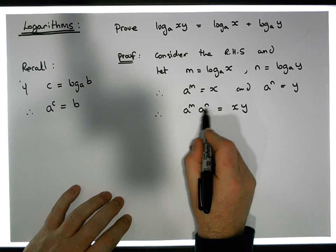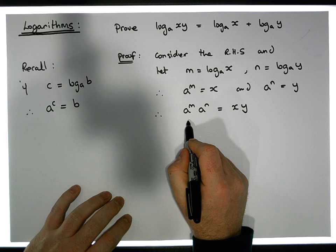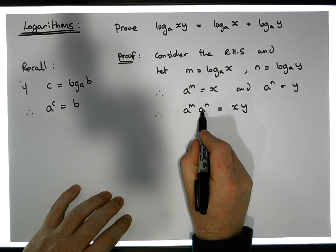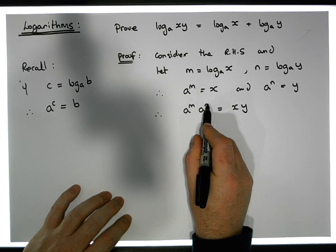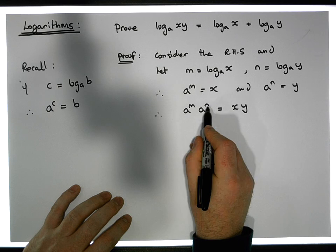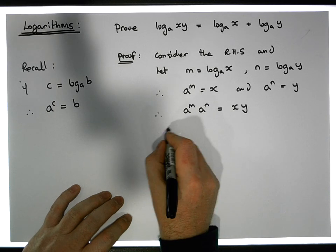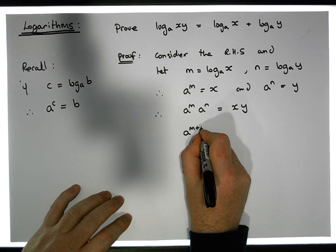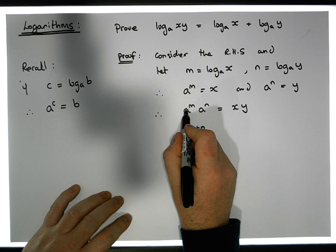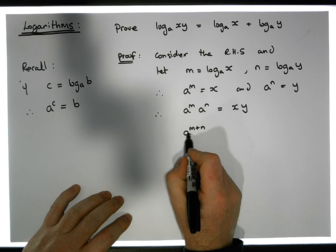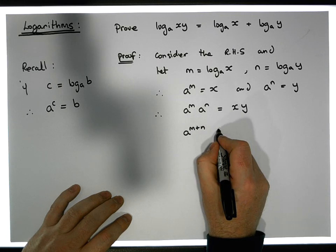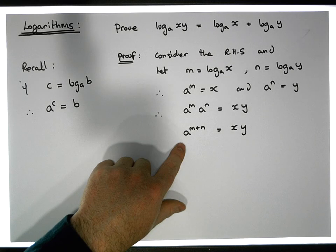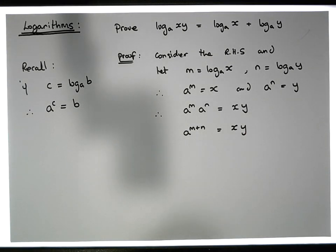We know the laws of exponents: when we have a base raised to a power times the same base raised to another power, the result is the base raised to the sum of those powers. So a to the m times a to the n is a to the m plus n, which must equal xy.